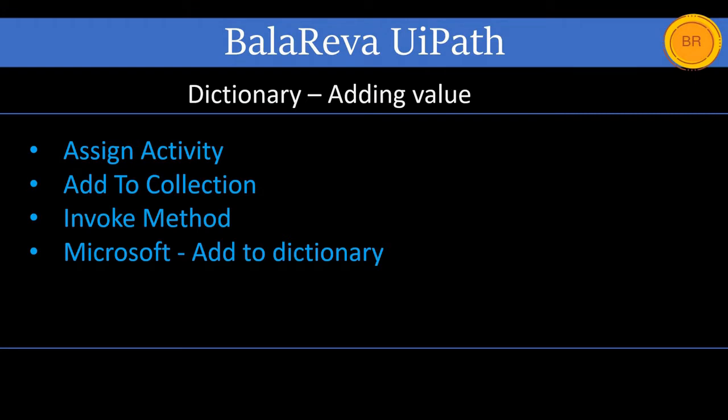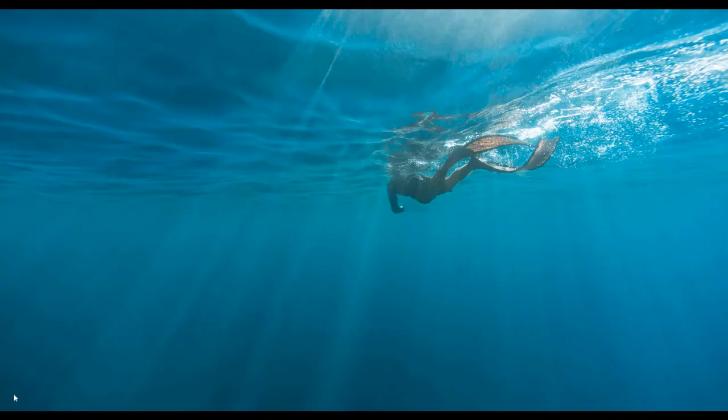Today we are going to see how to add values in the dictionary. First of all, we are going to see what is a dictionary. A dictionary is a collection of key and value pairs. When creating a dictionary, we need to specify the type for key and value. Dictionary provides fast lookup for values using the key. Keys in the dictionary must be unique.